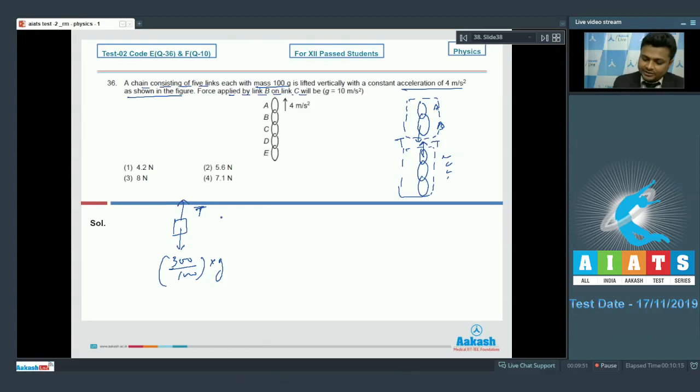It is lifting vertically with acceleration 4 meter per second squared. Apply second law of motion. We get total force, that is T minus 300 upon 1000 into G is equal to ma, that is 300 upon 1000 into acceleration a, that is 4. So T will be equal to 3 plus 1.2, that is 4.2 Newton. We will go with option number 1.